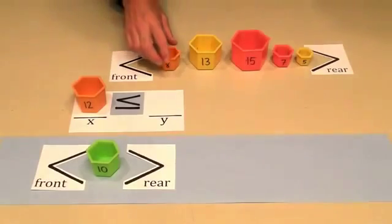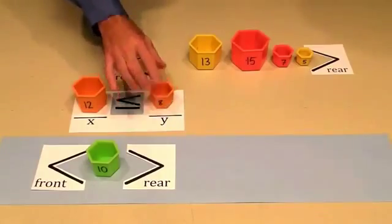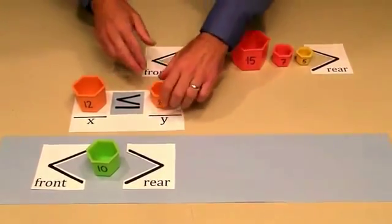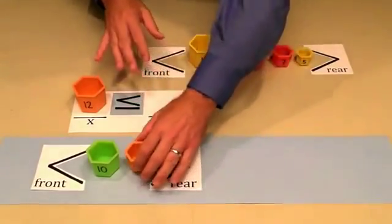This is pass number two. We dequeue from the front of the original queue. Compare is X less than or equal to Y. It's not, so we enqueue.